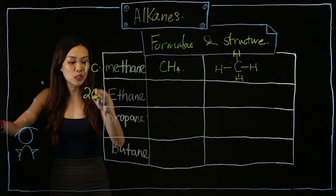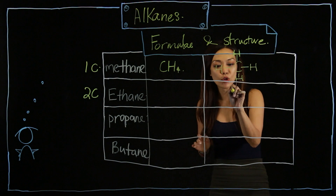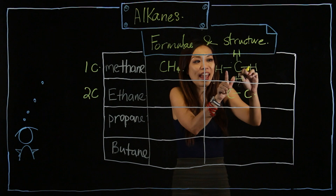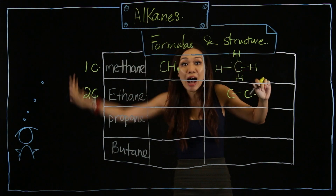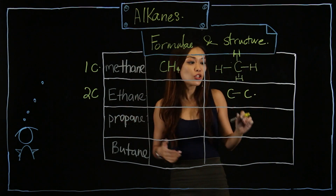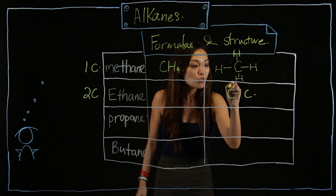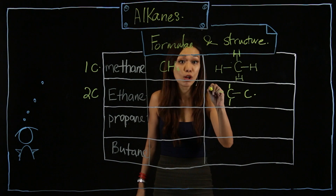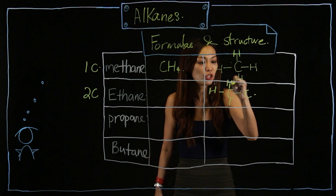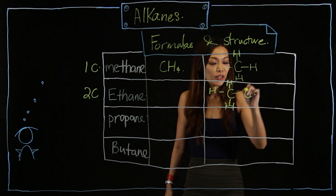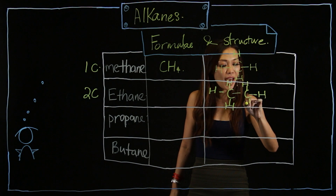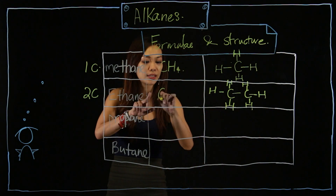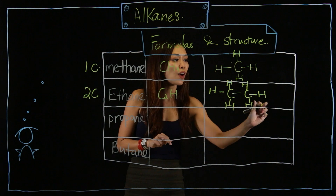Ethane means two C. So how do I make sense of two C? I draw them side by side. One carbon has four electrons at the outer shell where they will share, so there will be four lines — one, two, three, and four. Then I insert H, H, H on one side, and H, H, H on the other. From the structure, you come up with the formula: C2H6.